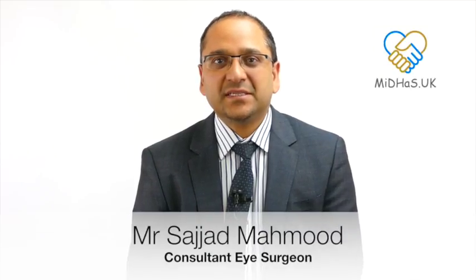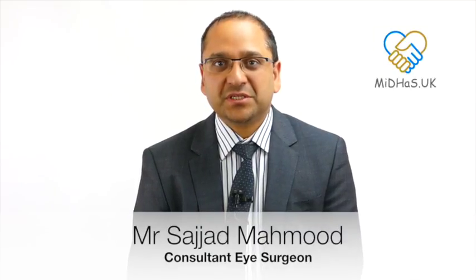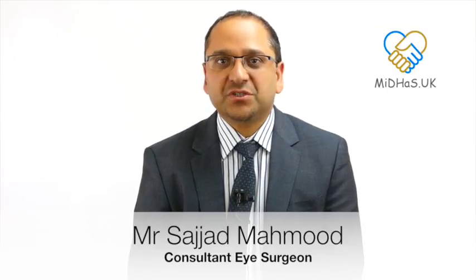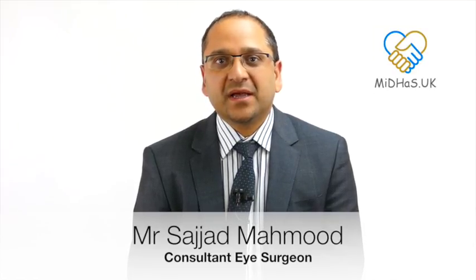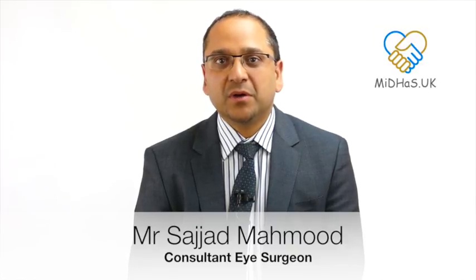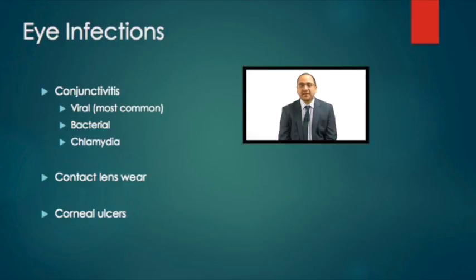This is a series of presentations relating to infections of the eyes. I'll be listing the common causes and the less common causes. The most common eye infection is referred to as conjunctivitis, and this can be caused by different types: viruses — that's viral conjunctivitis — bacteria — that's bacterial conjunctivitis — and less commonly, conjunctivitis can also be caused by an agent called chlamydia.